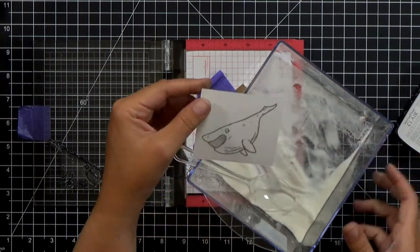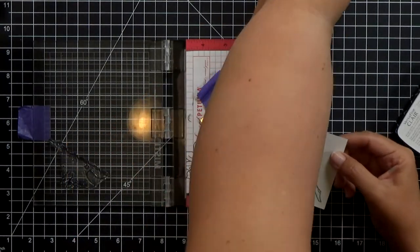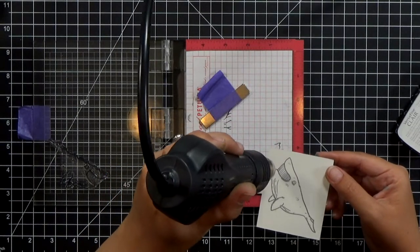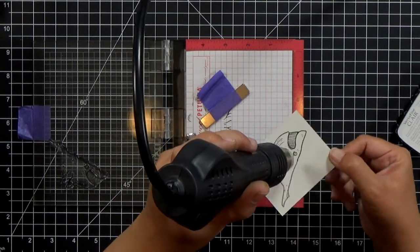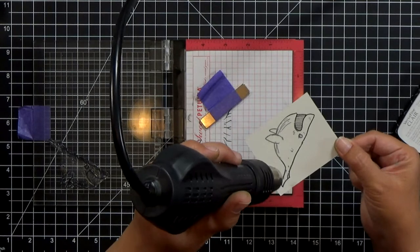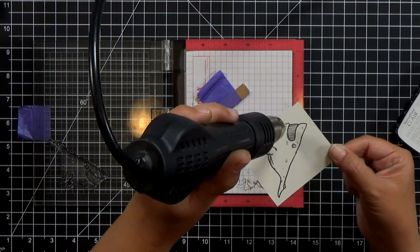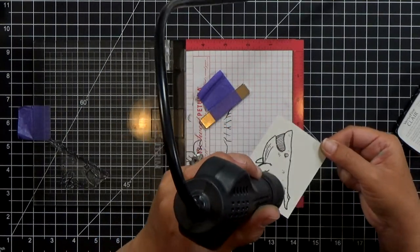I'm stamping on the smooth side and I prepped it with a powder tool and then I stamped it with VersaFine Clair ink, the black ink, and then I put some clear embossing powder on top and I can zap it real quick with my heat gun and that will give me a nice crisp image that I can then go ahead and watercolor.